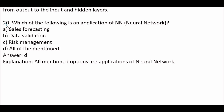Next question: which of the following is an application of neural networks? Option A: sales forecasting. Option B: data validation. Option C: risk management. Option D: all of the mentioned. The right answer is option D — all of the mentioned, as sales forecasting, data validation, and risk management are all applications of neural networks.